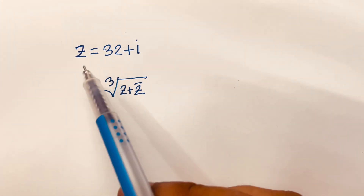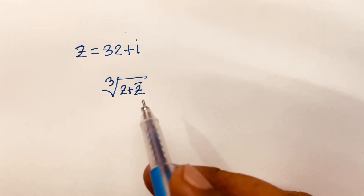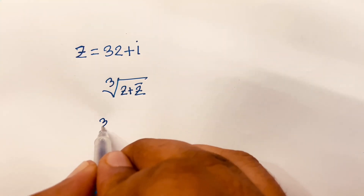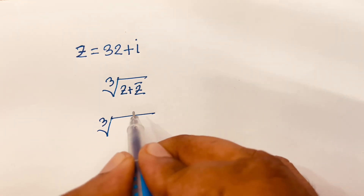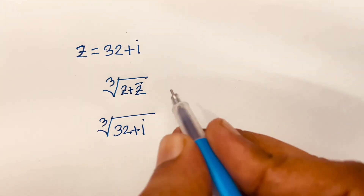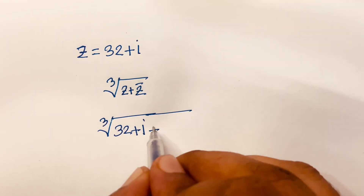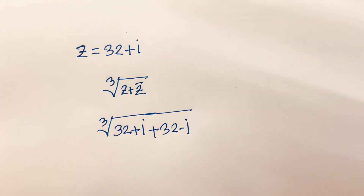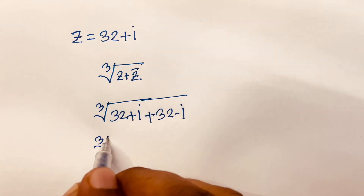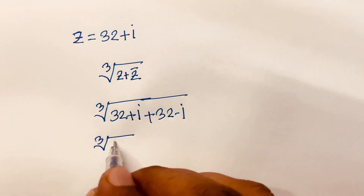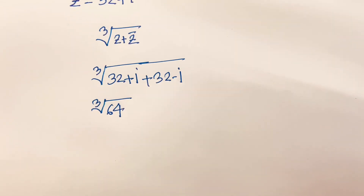Hello everyone. We need to solve: z is equal to 32 plus i, and find the cube root of z plus z-bar. Let us start. We know z is equal to 32 plus i, and z-bar is equal to 32 minus i, because we just change the sign. Then the imaginary parts cancel, and we get 32 plus 32, which equals 64.